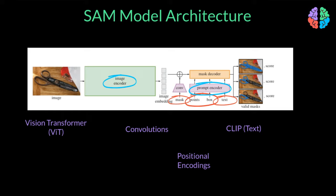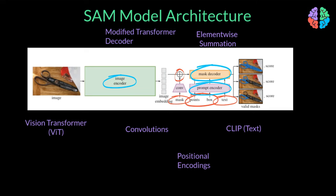The image and mask embeddings are then fused together using element-wise summation and finally put through a decoder, as we now have to uplift these embeddings to the size of the image itself to arrive at the segmentation mask, the dimensions of which match the dimensions of the input. For the decoder, they have chosen a modified transformer decoder block.